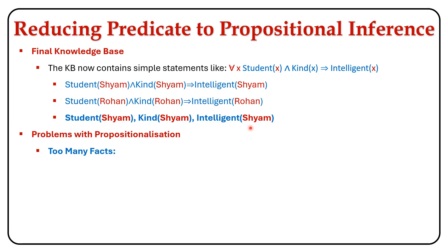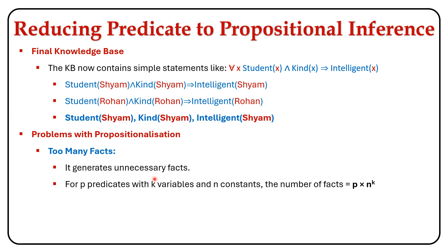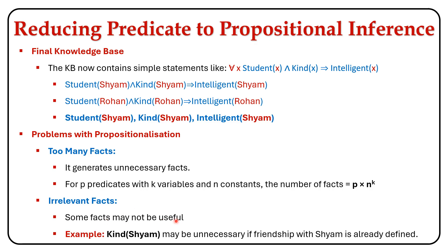The problem with the knowledge base is that it generates too many unnecessary facts. For P predicates with K variables and N constants, the number of facts is represented as P × N^K. We may also have irrelevant facts — some facts may not be useful. For example, kind(Sham) may be unnecessary if a friendship with Sham is already defined. These are the problems when converting predicate logic sentences into propositional inference.